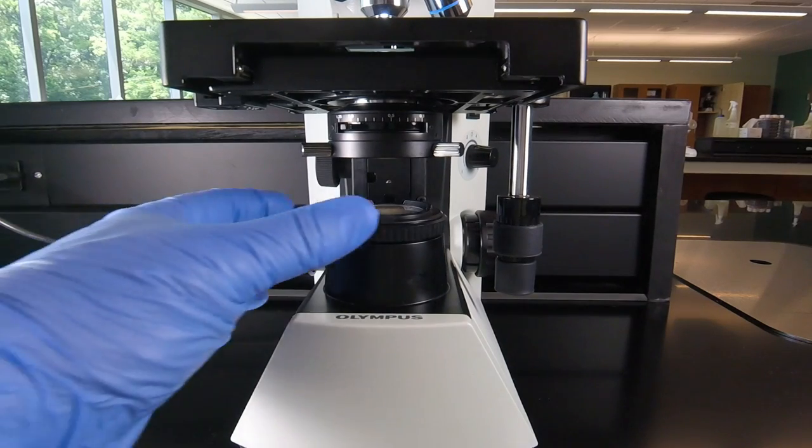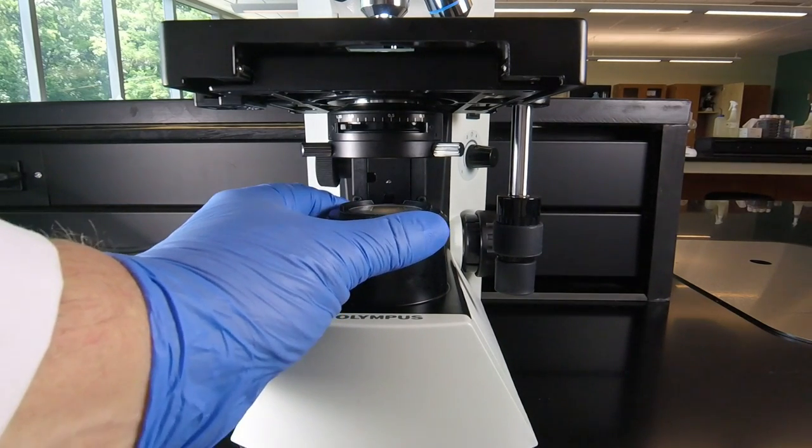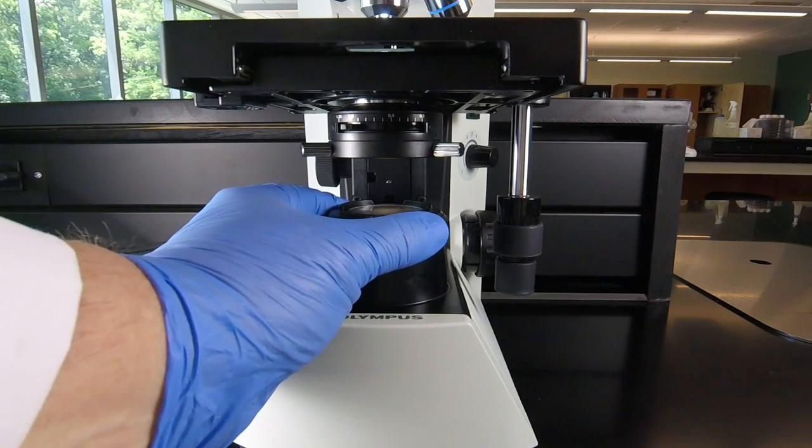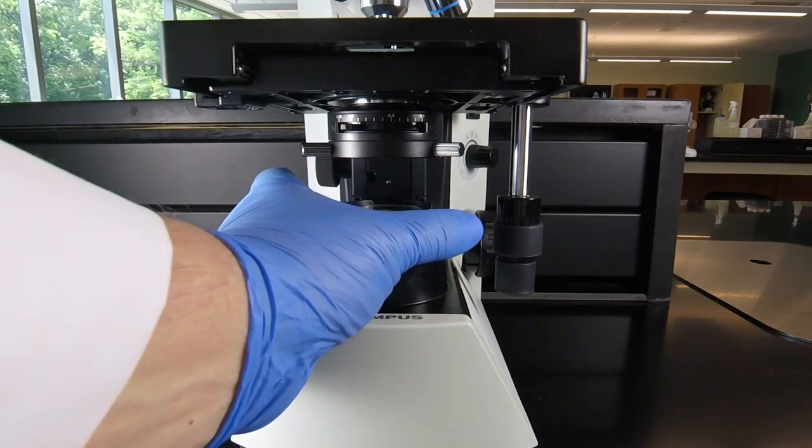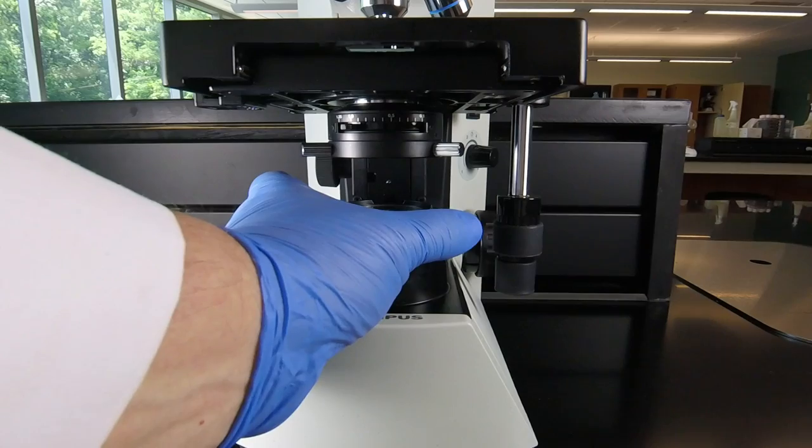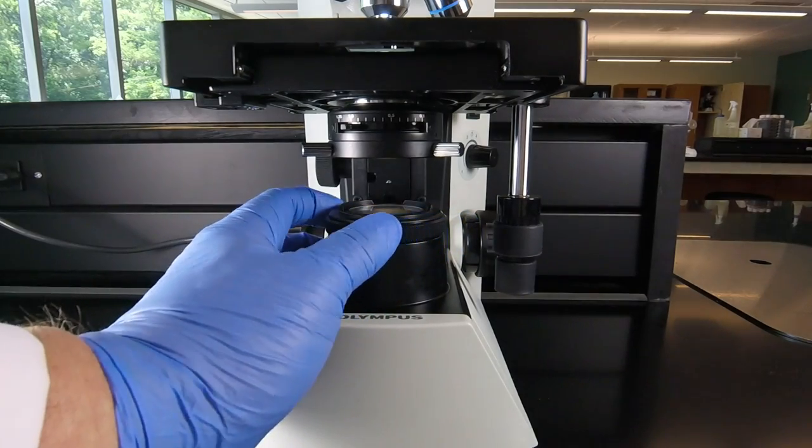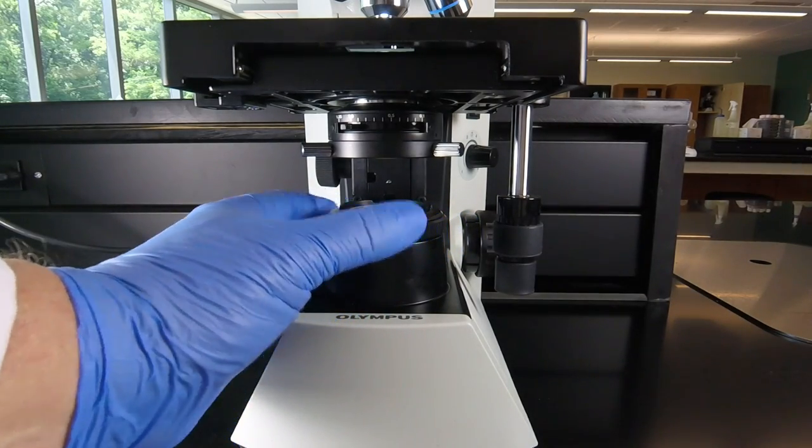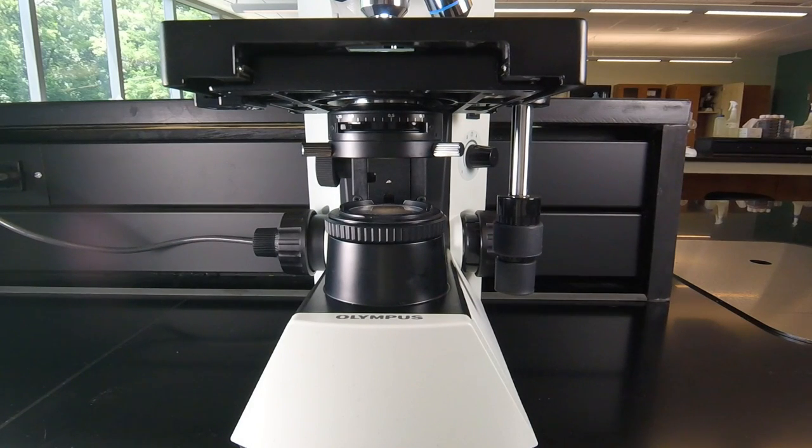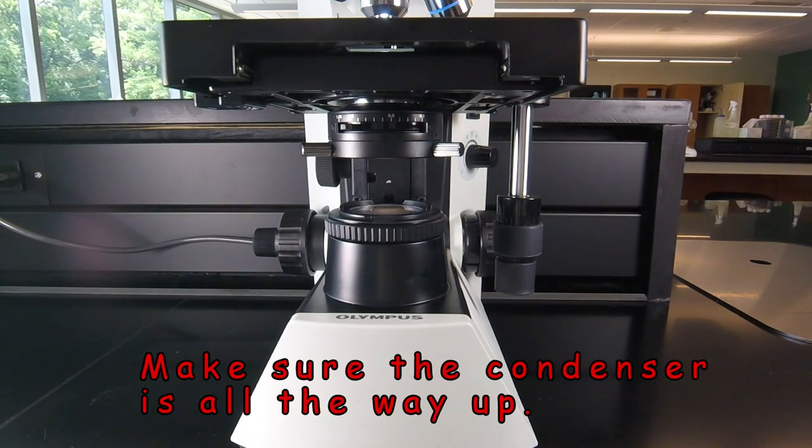There is a ring down here, and that's something that's used mostly for lower magnifications. We leave that all the way open. This can close, but if that closes, you won't have enough light for oil immersion microscopy. So that ring should be all the way clockwise or wide open when we're using oil immersion microscopy.